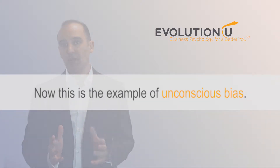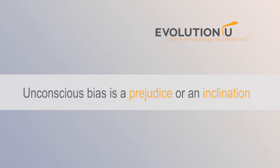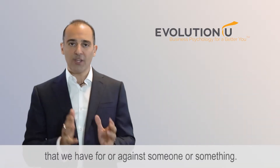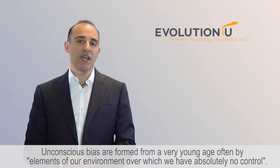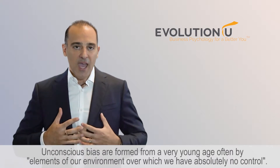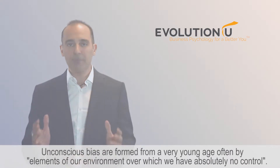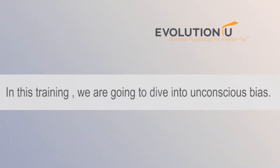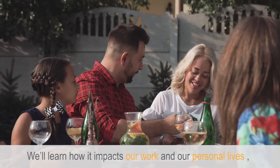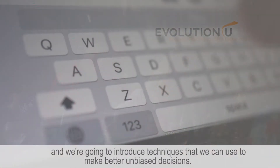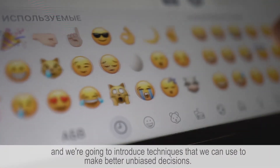Now this is an example of unconscious bias. Unconscious bias is a prejudice or an inclination that we have for or against someone or something. Unconscious biases are formed from a very young age, often by elements of our environment over which we have absolutely no control. In this training, we're going to dive into unconscious bias. We'll learn how it impacts our work and our personal lives, and we're going to introduce techniques that we can use to make better, unbiased decisions.